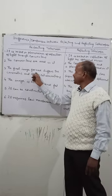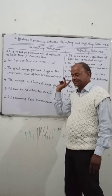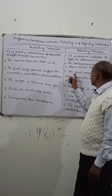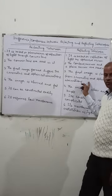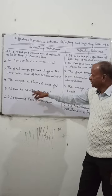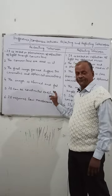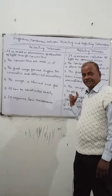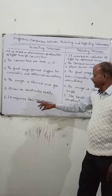In the refracting telescope, the final image suffers from chromatic and spherical aberration, and the image is blurred and faded. In the reflecting telescope, the final image is free from chromatic and spherical aberration, and the image is bright and clear.